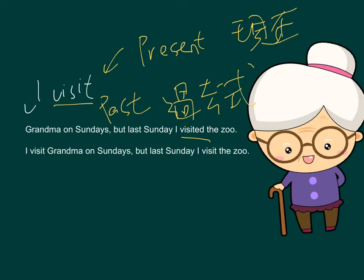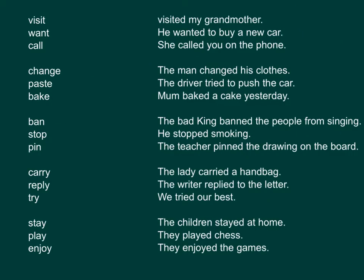I visited the zoo. So this sentence, we will consider it as correct. While for the second one: 'I visited grandma on Sundays. Last Sunday I visited the zoo.' As I explained previously, 我之前講過啦，when we talk about the event in the past, in order to make the first sentence correct, we have to change 'visit' to 'visited.' So now we have more exercises to practice.